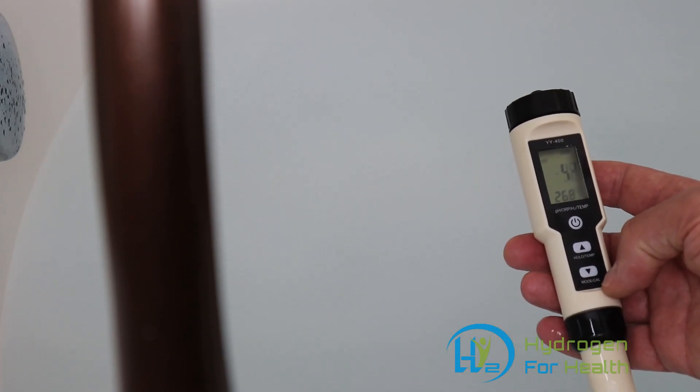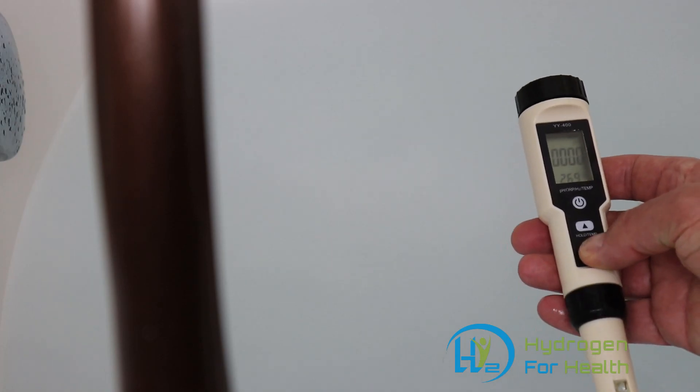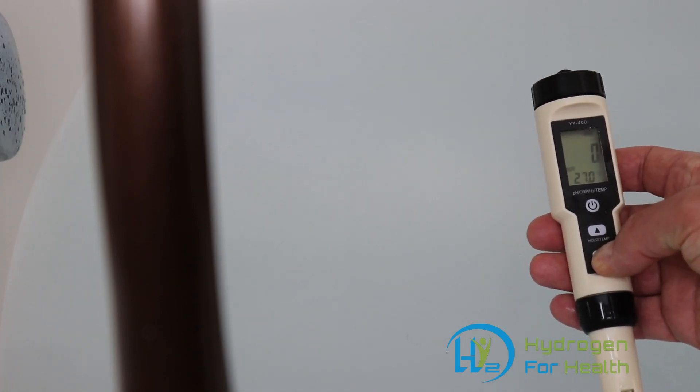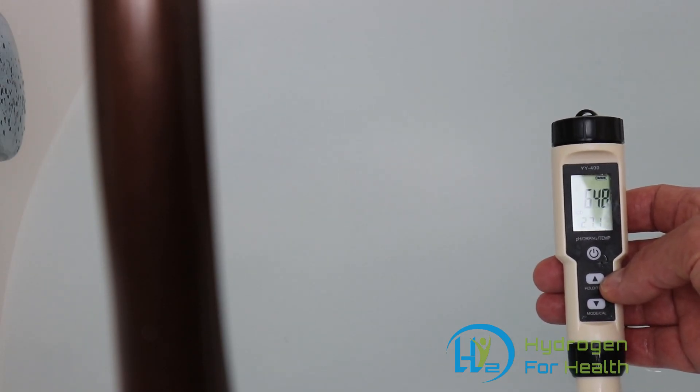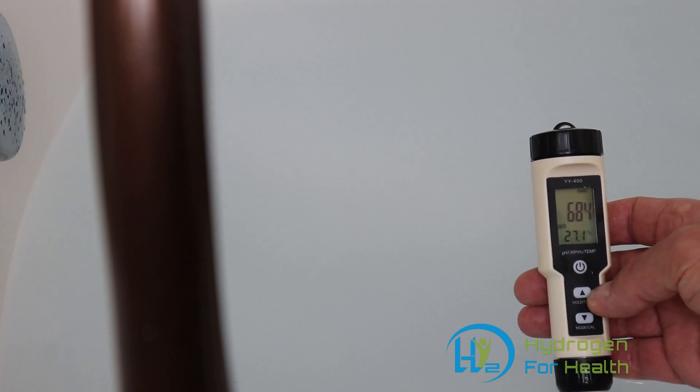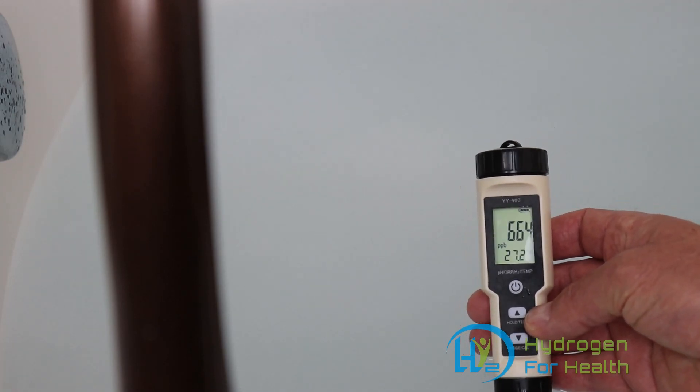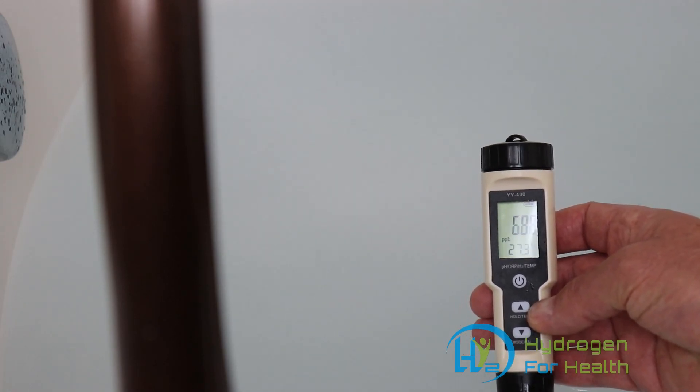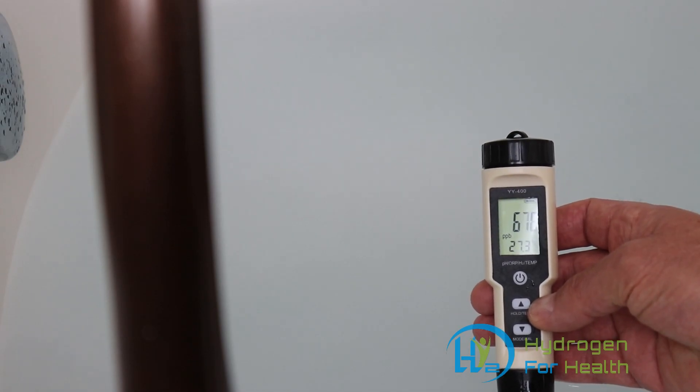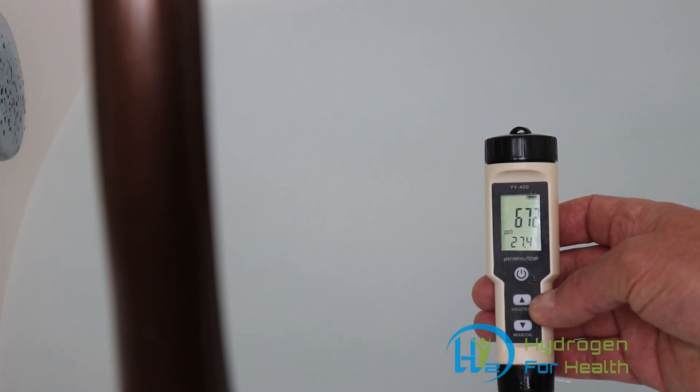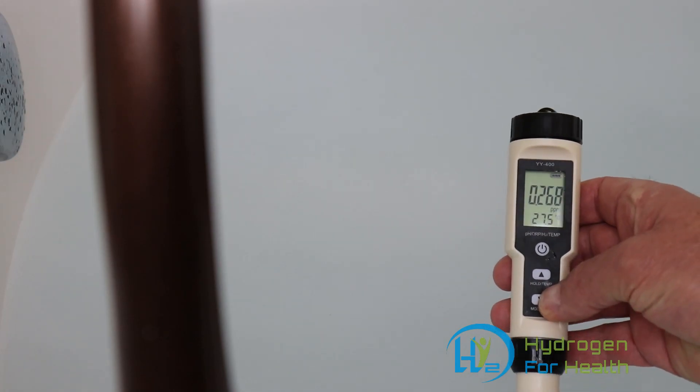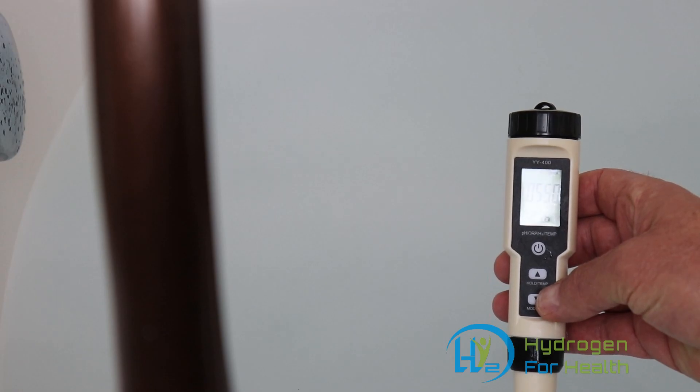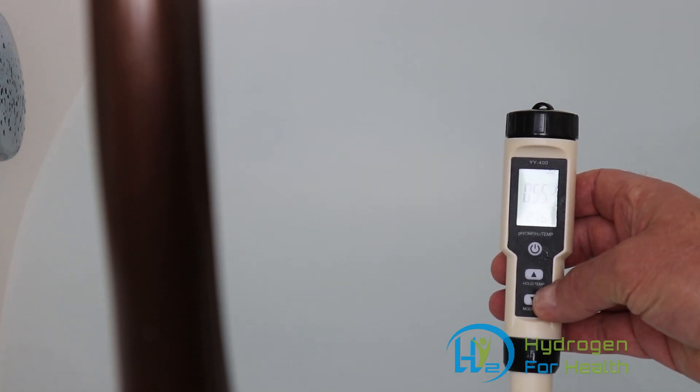We can also look at the hydrogen content with this meter. As you can see right there it's about 650 to 660 parts per billion hydrogen which is about 0.6 to about 0.65 ppm.